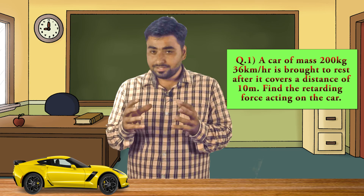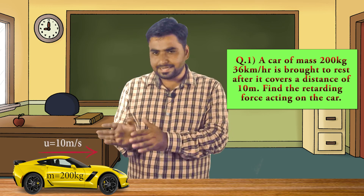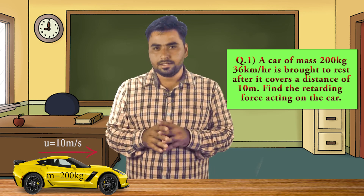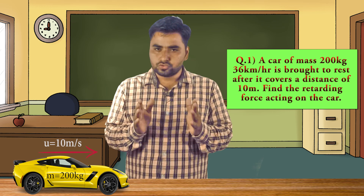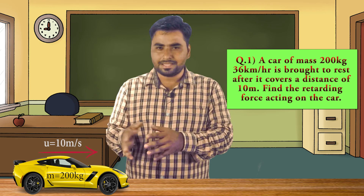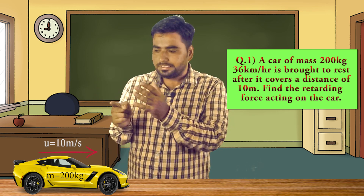There is a car with a mass of 200 kg. It is already moving with a velocity — the question says 36 km per hour, but we have to do the calculation in the SI system. So 36 km per hour multiplied by 5/18 — or 1000/3600 — will become 10 meters per second. So initial velocity u = 10 meters per second.